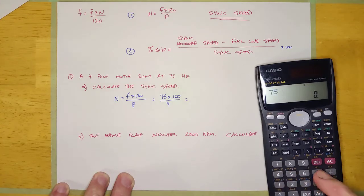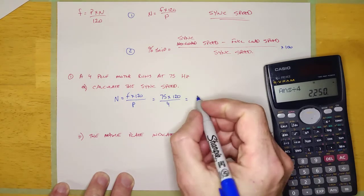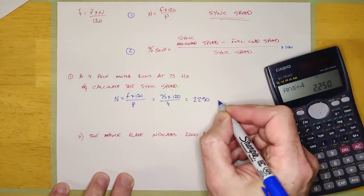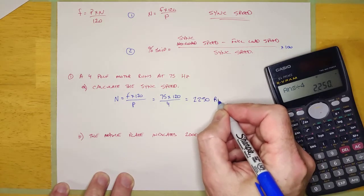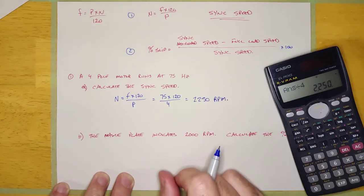It's 75 times 120 equals divided by four equals. It looks like this thing is going to have a sync speed of 2250 RPM. Okay, guys, and so that's all. That's all there is to it.